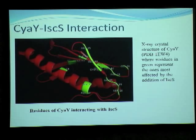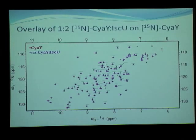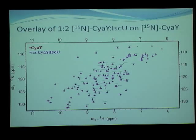Here is the X-ray crystal structure of CyaY, and the residues in green are the ones actually showing interaction with IscS. This is an overlay of CyaY with ISCU — the scaffold protein — onto CyaY. Almost all of the peaks have completely overlapped, which shows that no interaction exists between CyaY and ISCU.